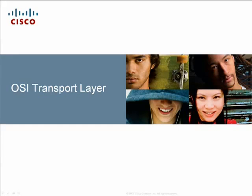Applications such as email, web browsers, and instant messaging clients enable people to use computers and networks to send messages and find information. Data from each of these applications is packaged, transported, and delivered to the appropriate destination device. The transport layer of the OSI model is responsible for the overall end-to-end transfer of application data.